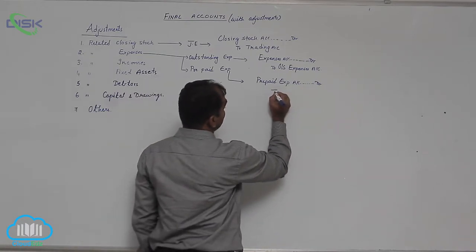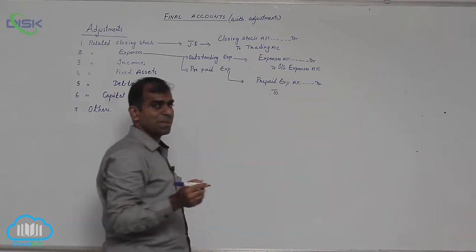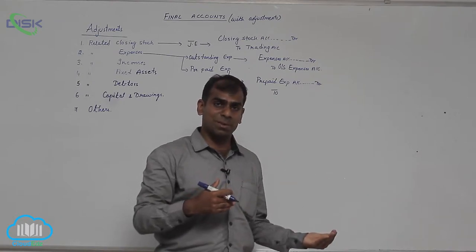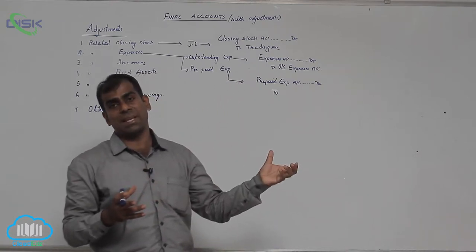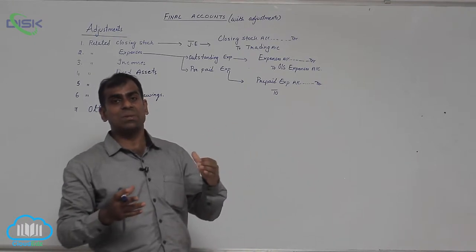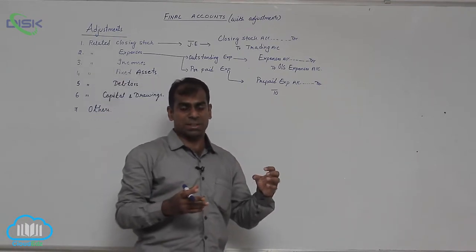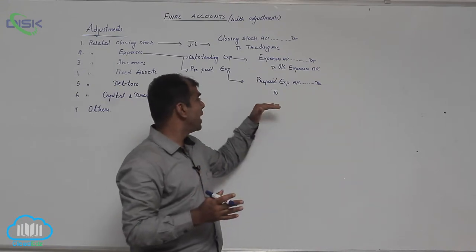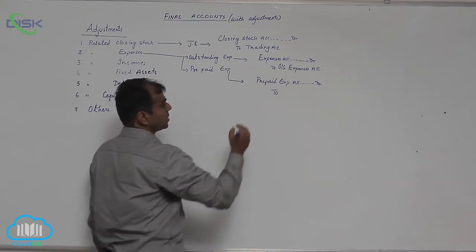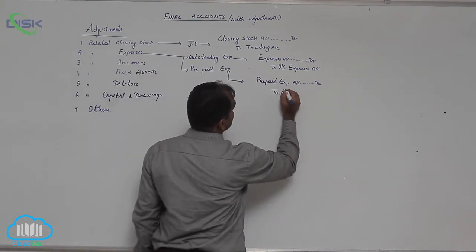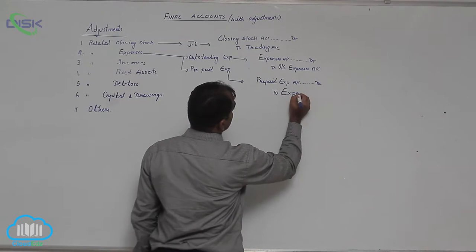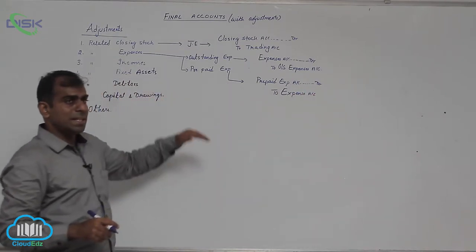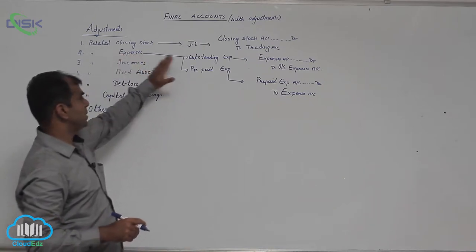What we must do is minus the prepaid amount from the expense, because we already debited the expense with this year's amount and next year's amount. So we have to remove next year's amount from the expense. To remove an amount from an account which was previously debited is done by crediting it. So we credit the concerned expense account. These two are the adjustments for expenses.